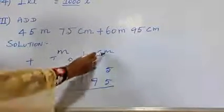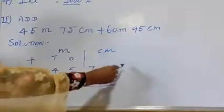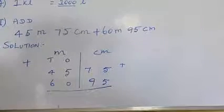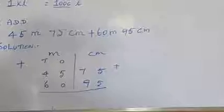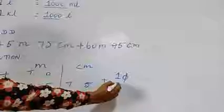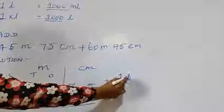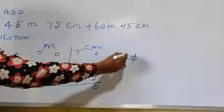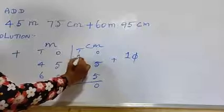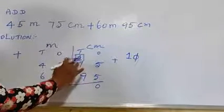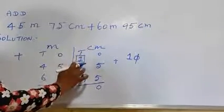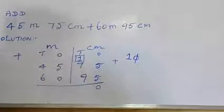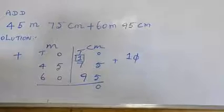First comes to cm column. Here we have 5 plus 5, so 5 plus 5, how much children? 10. So I write this 0 under the ones place. I carry the remaining 1 into the tens place. So next 1 plus 7 is 8. Then 8 plus 9, how much children? Yes, very good, 17.